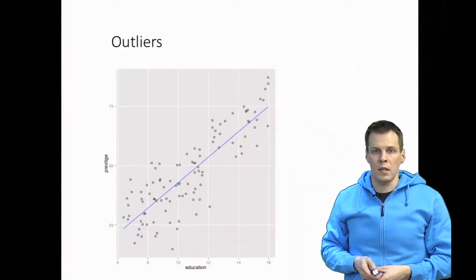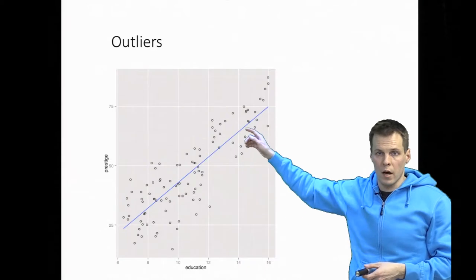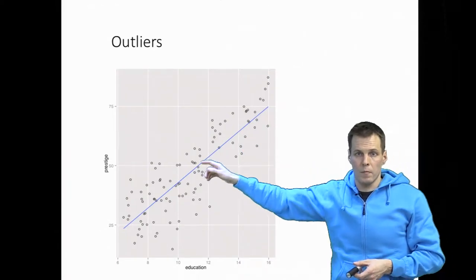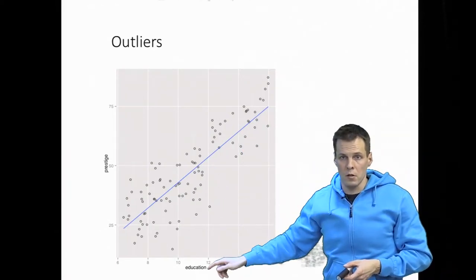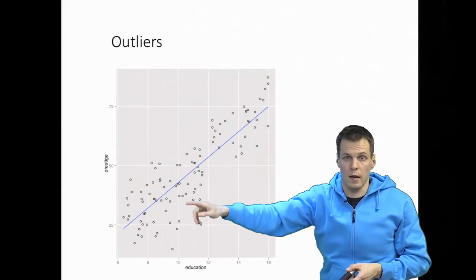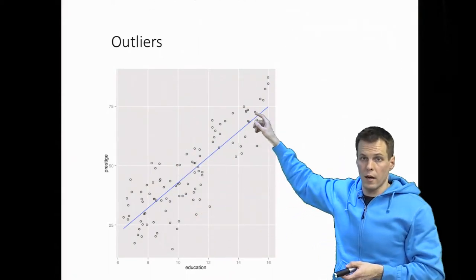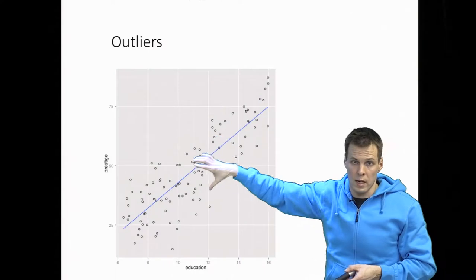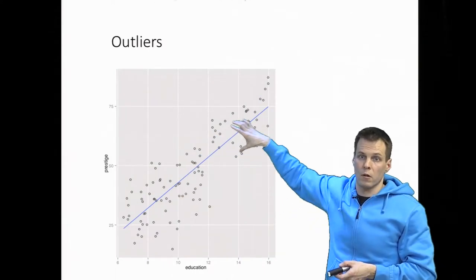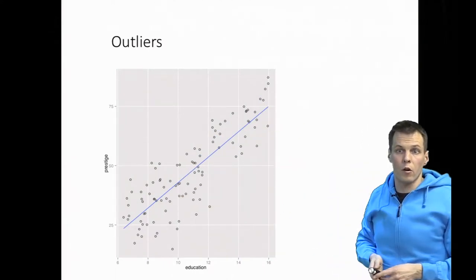Here we have the Prestige dataset. We have a regression line of the effect of education on prestige, and it's a clean, nice regression line. The observations are homoscedastic; they are spread evenly around the regression line and there are no problems.